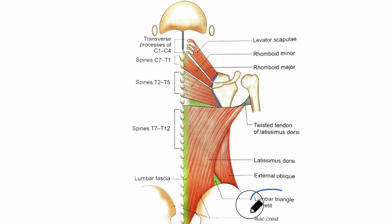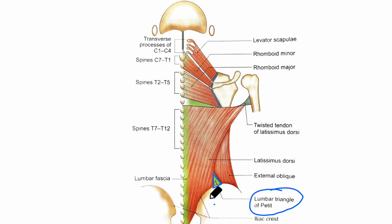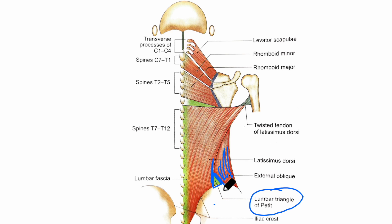Next let us learn about the lumbar triangle of Petit. It is a small triangle that is surrounded by muscles. It is bounded medially by the lateral border of the latissimus dorsi, laterally by the posterior border of the external oblique muscle, and inferiorly by the iliac crest. There is a chance of formation of hernia occasionally at this site, and that is called the lumbar hernia.